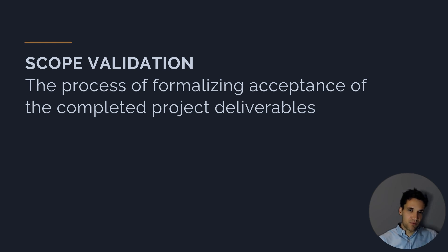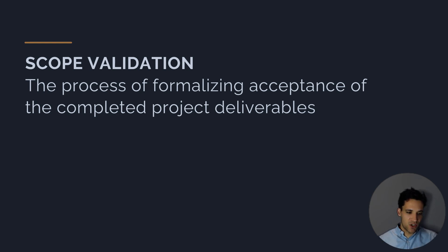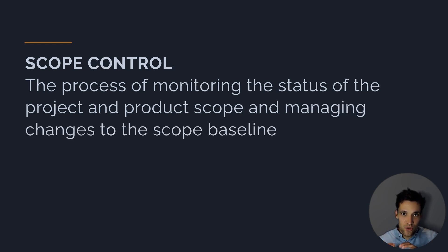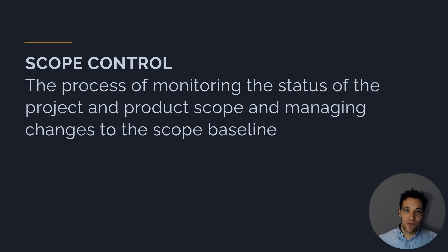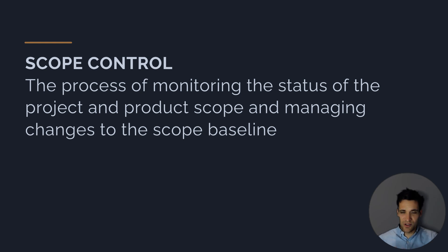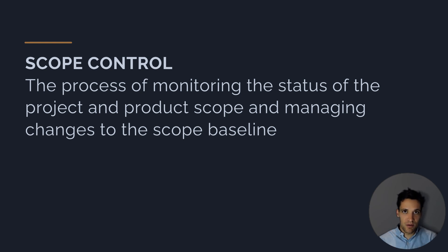All of that happens in the planning phase. After we've defined scope and created our scope baseline, we move into project execution. During execution, while we deliver the project scope, we also need to validate it — scope validation is the process of formalizing acceptance of the completed project deliverables, checking what we've done matches our original requirements. We also need to control project scope — ensuring we're not doing extra work beyond what we said we were going to do, and managing changes to the scope baseline through a formal change management process.